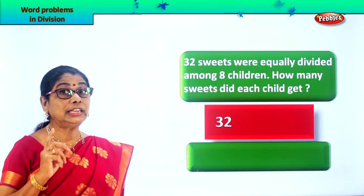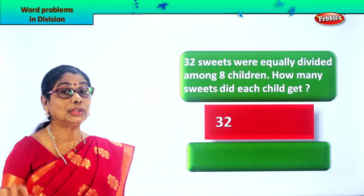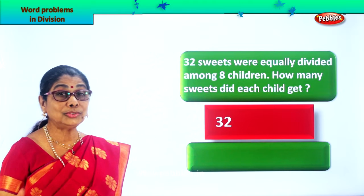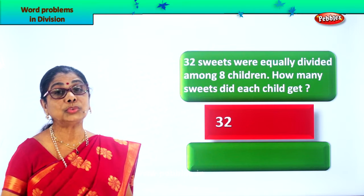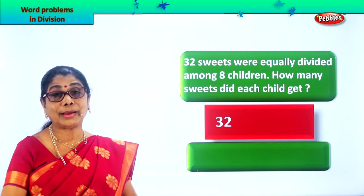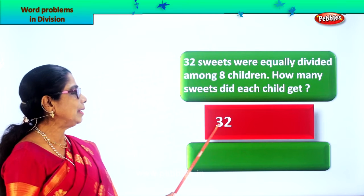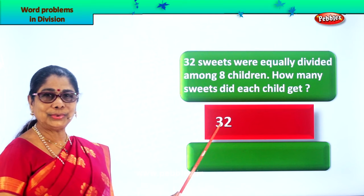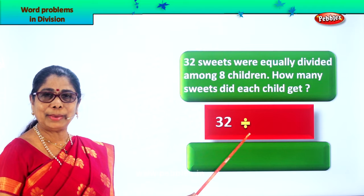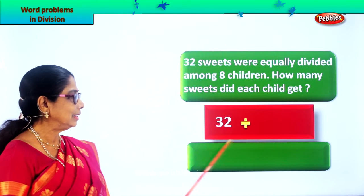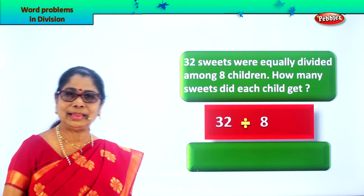Now, what is division? Division is equal sharing. So 8 children, 32 sweets — it has to be given equally, otherwise one child will cry. So we write 32, division sign, divided by 8. 32 divided by 8.